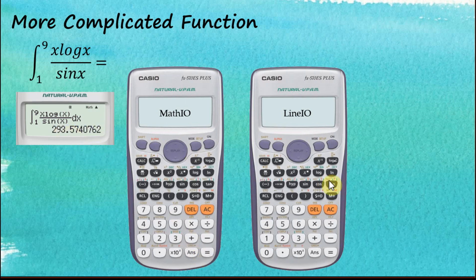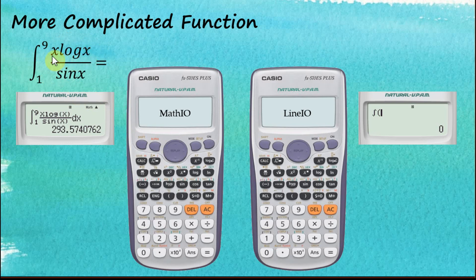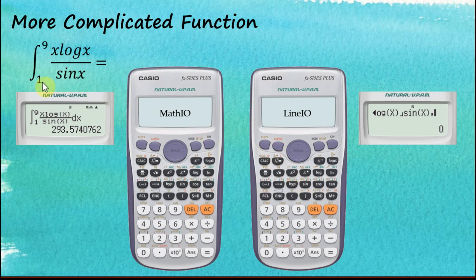For Linear Input/Output it's more or less the same. Start with the integration function, then insert the numerator: x·log(x). Close brackets, then use 'over' to enter sine: alpha-x, close brackets. Then comma, lower limit one, comma again, upper limit nine, close bracket, and press equal.